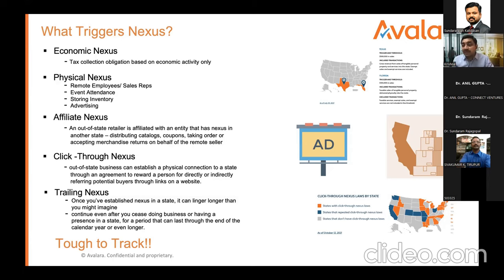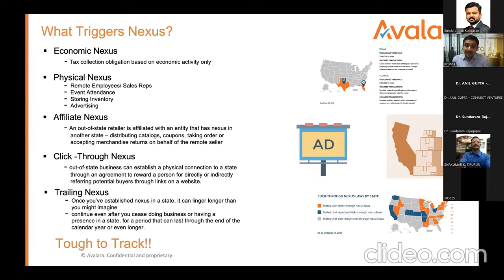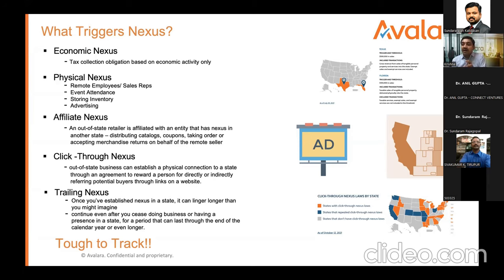Click-through nexus occurs when someone redirects traffic to your website by clicking on an ad or referring buyers. In a state like New York, the threshold is $10,000 in a year. Then there is trailing nexus — once you have established nexus and shut down business in a state like Washington, you are still obliged to comply with sales tax for at least one more year. Even if you shut down your business, that nexus can trail along.